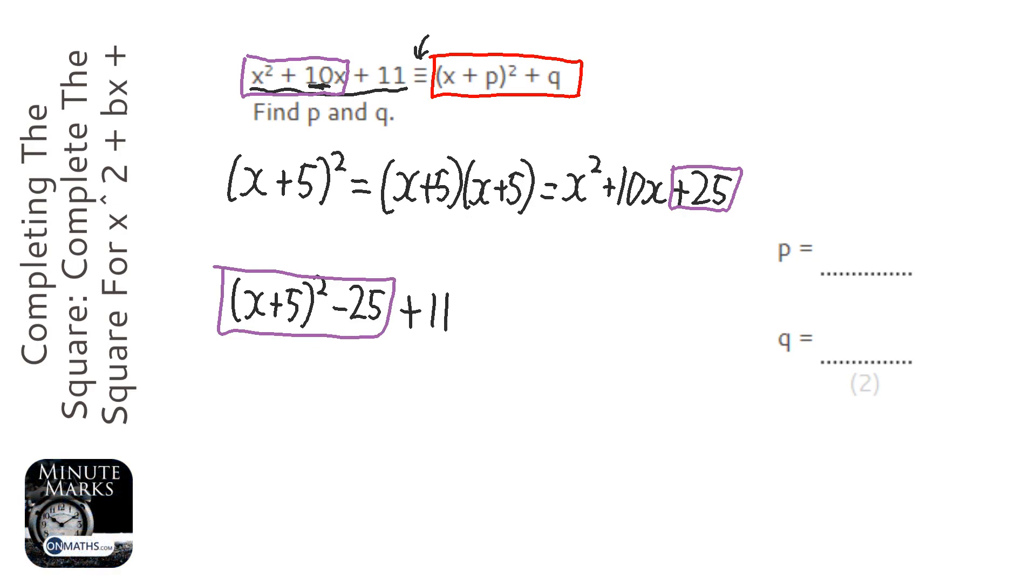Now, that is identical to the bit on the left-hand side in the question. There's no difference, we haven't changed anything, we've just had to take away 25 because that bracket creates a 25.